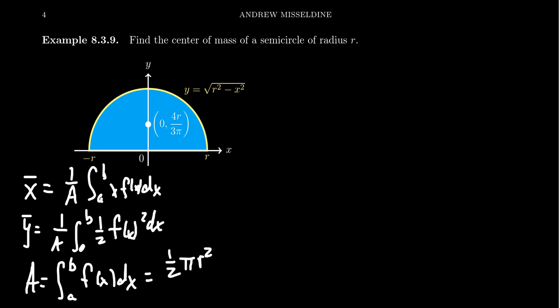And so if we apply this to x bar, x bar is going to be 1 over 1 half pi r squared. We get the integral. In this case, we're going to integrate from the left side to the right side. That's where the x ranges. So we get from negative r to r. We're going to get x times our function.